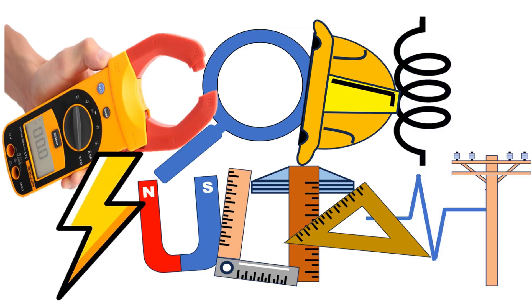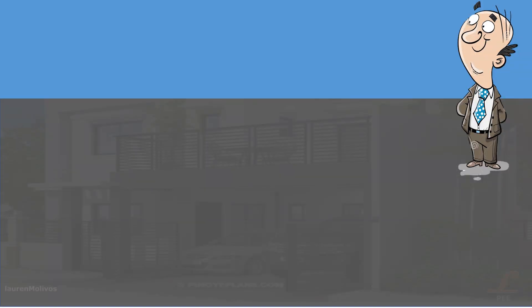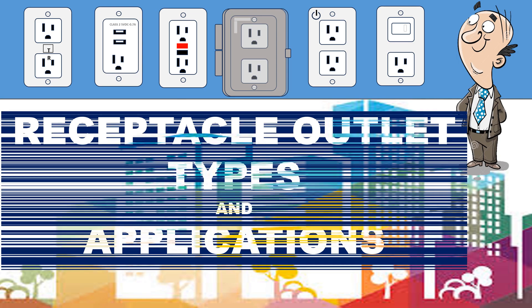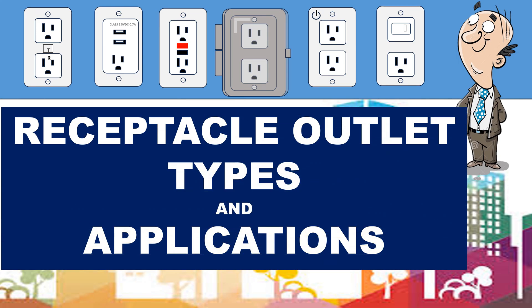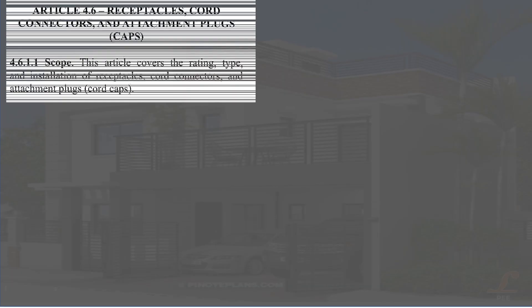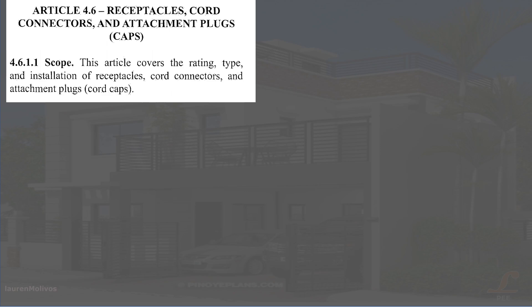Welcome to my channel. Not all electrical outlets on premises are the same, because there are many different types of electrical outlets depending on their applications. Our topic is about receptacle outlet types and applications as required by code. Article 4.6 covers the rating, type, and installation of receptacles, cord connectors, and attachment plugs.